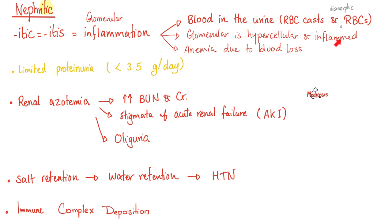The glomeruli are hypercellular and inflamed. In the case of Goodpasture, you can even see crescents because it's a rapidly progressive glomerulonephritis. If you lose a lot of blood, you can get anemia. There is limited proteinuria, lower than in nephrotic syndrome, and renal azotemia or failure.